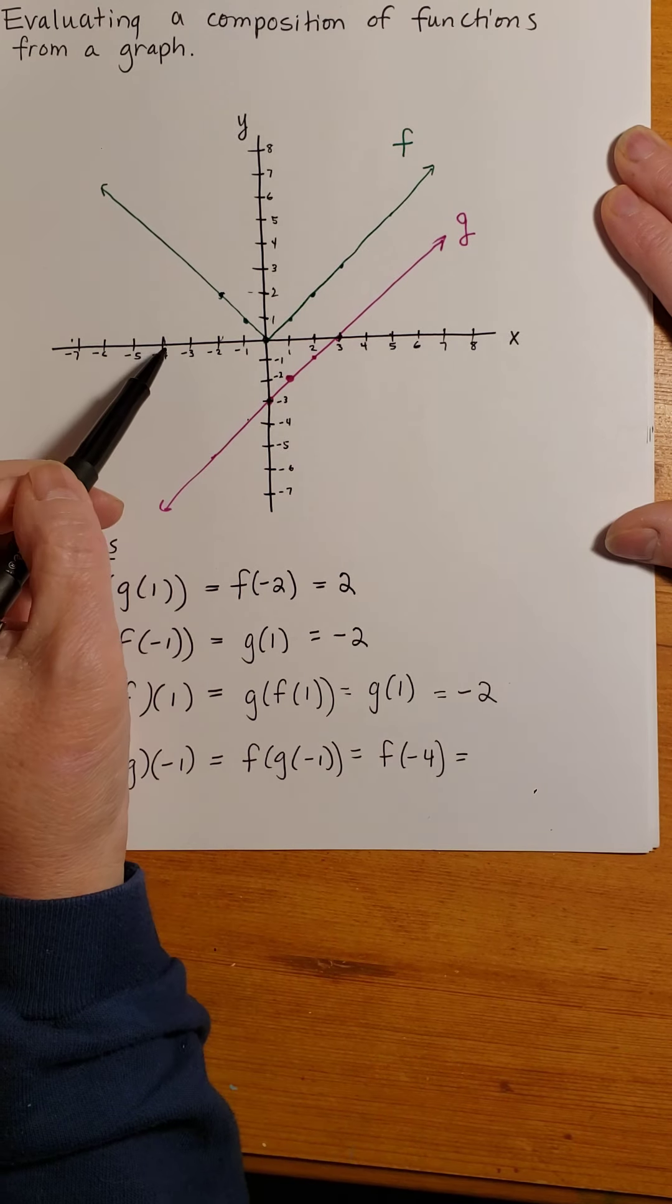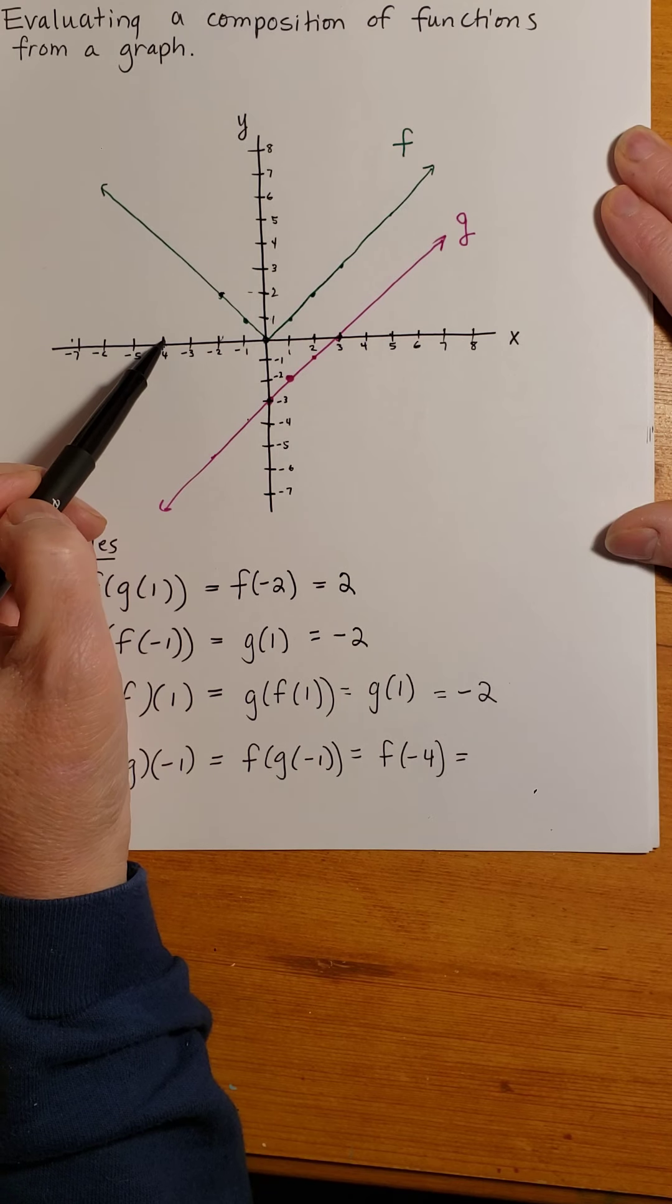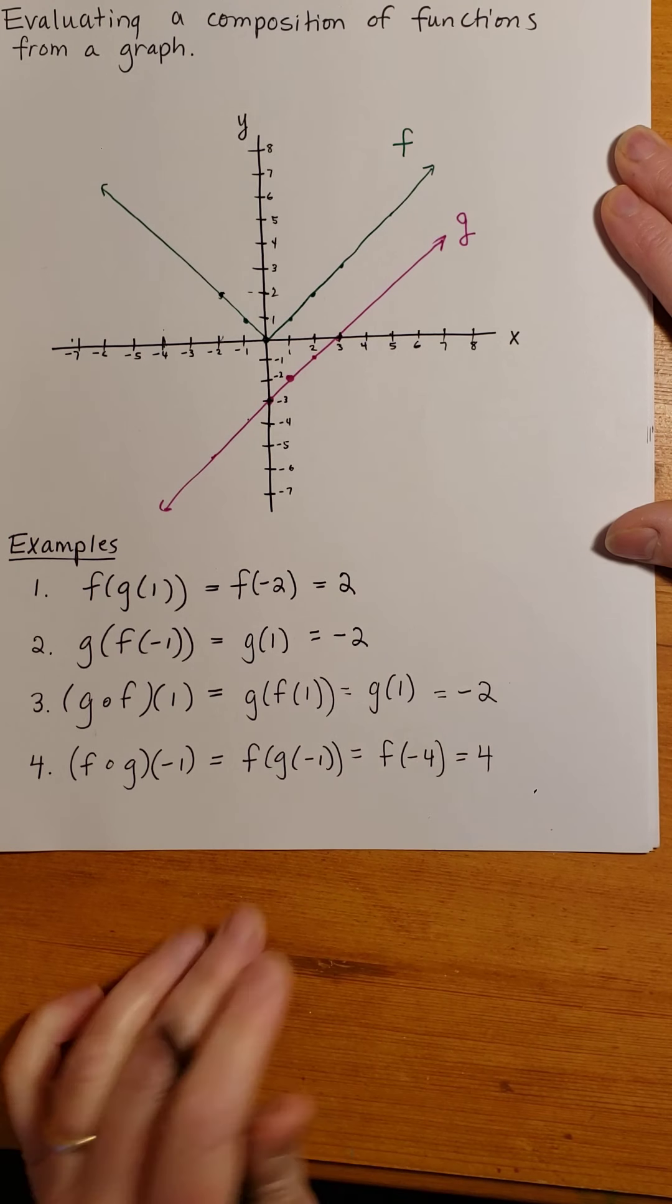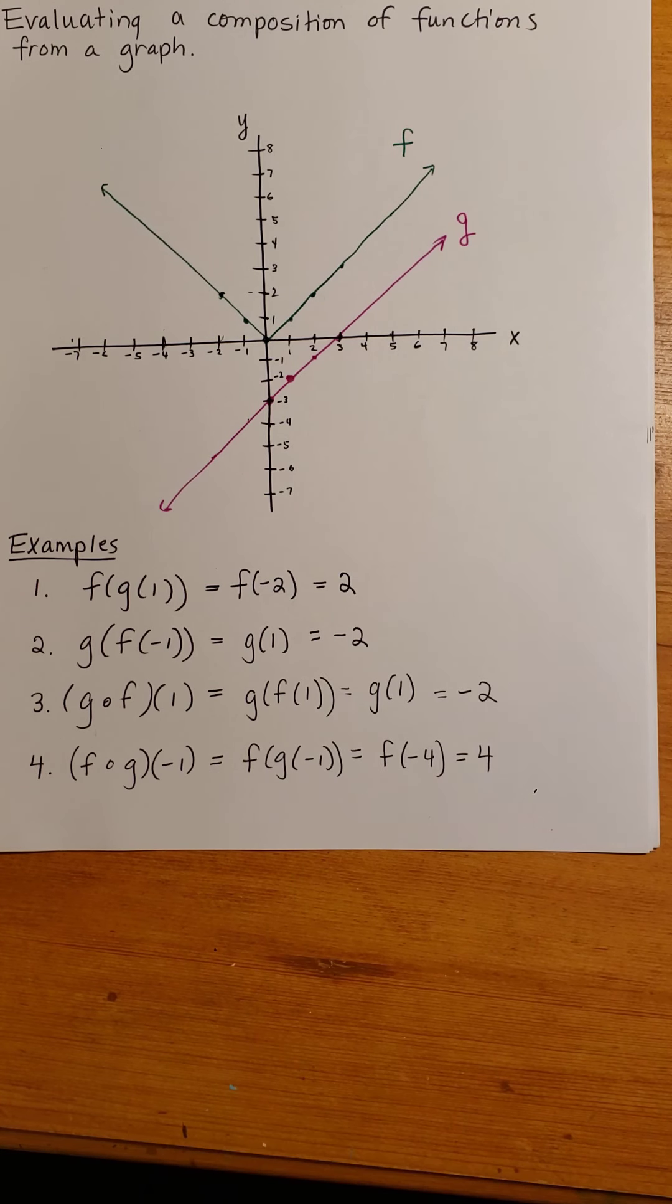And then plugging in negative 4 into f, taking the vertical path, and then the horizontal path, we're at 4. So that is how you evaluate a composition of 2 functions.